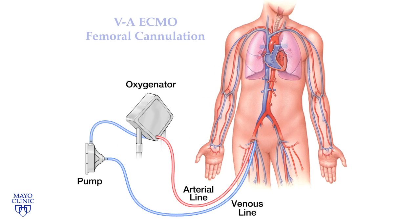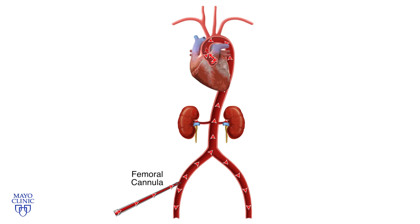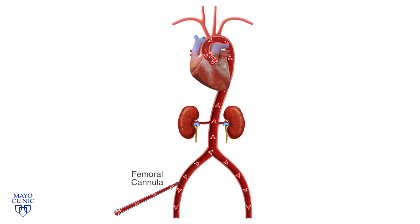VA ECMO is often performed using peripherally placed cannulas, typically placed in the femoral vessels. This animation shows arterial ECMO access in the femoral artery. With extreme cardiac dysfunction on ECMO support, if the heart is not beating and the aortic valve is not opening, the blood being pumped through this cannula provides 100% of the patient's blood flow. In this scenario, there's no mixing of the two circulations since no circulatory support is being provided by the native heart.